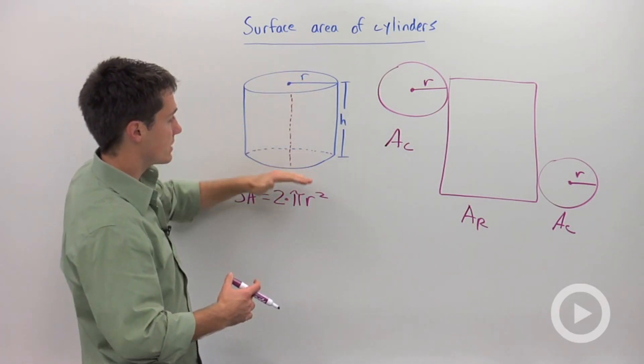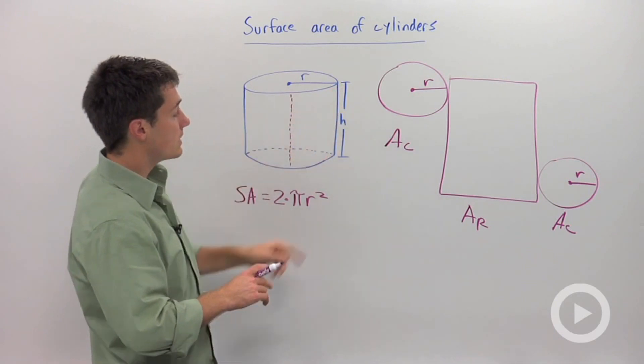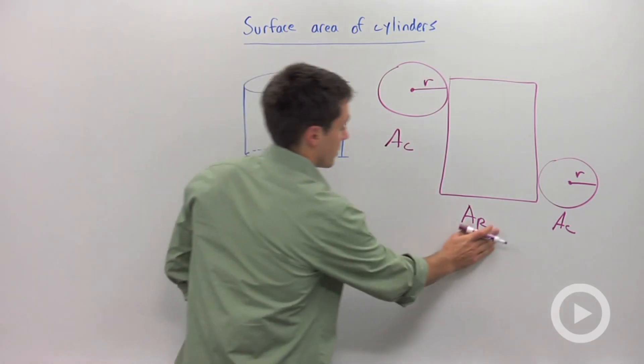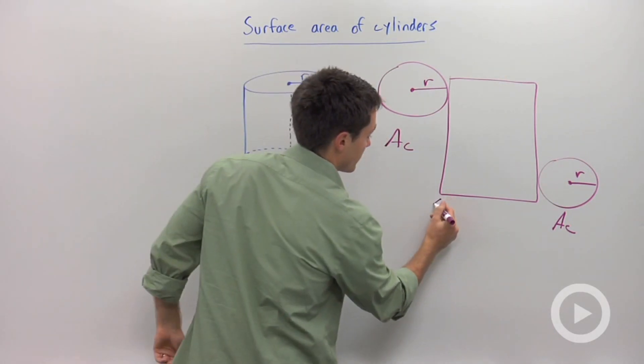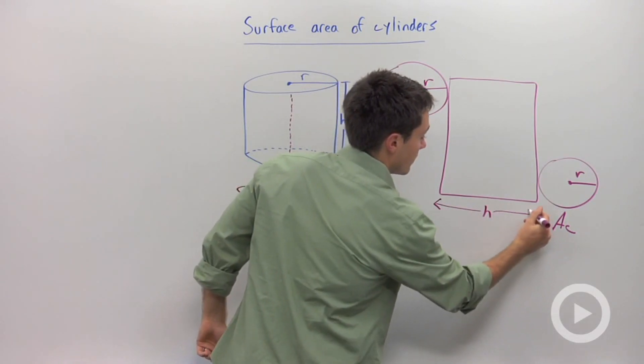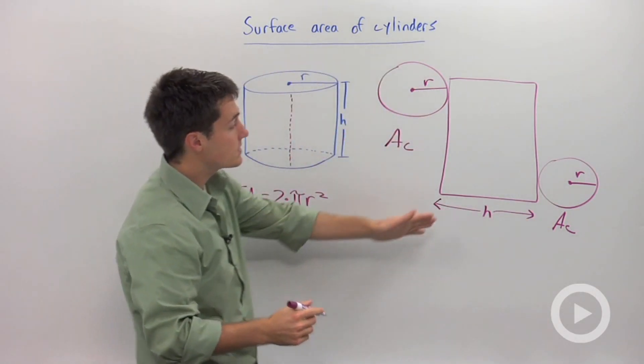Now what about this middle piece? Well the middle piece has a height of h. So I'm going to say that this right here is h.